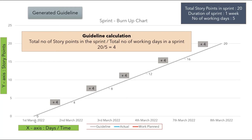As you can see, on the first day of the sprint the story point is zero, and every day 4 points are equally completed or burned up, so that finally it completes 20 story points on the last day of the sprint.